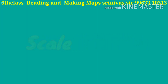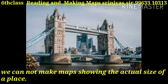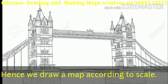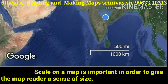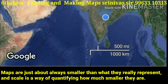The second feature of the map is scale. We cannot make maps showing the actual size of a place, hence we draw a map according to scale. Scale on a map is important in order to give the map reader a sense of size. Maps are almost always smaller than what they really represent, and scale is a way of quantifying how much smaller they are.